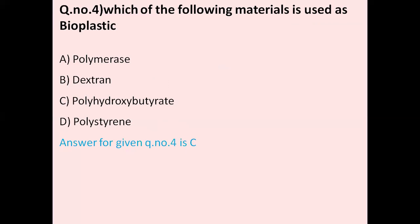Question number four: Which of the following materials is used as bioplastic? Option A polymerase, option B dextran, option C polyhydroxybutyrate, option D polystyrene. The correct answer is polyhydroxybutyrate, means PHB, which is a bioplastic.